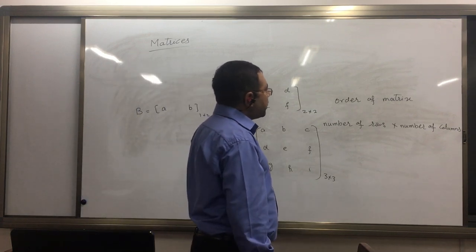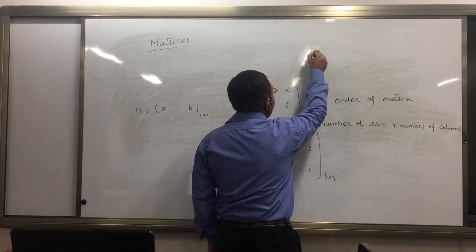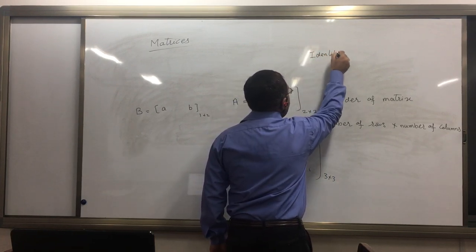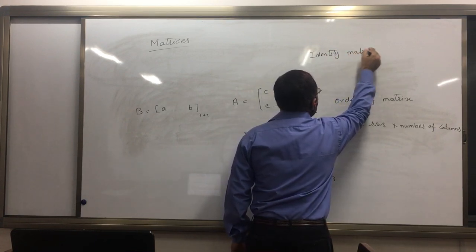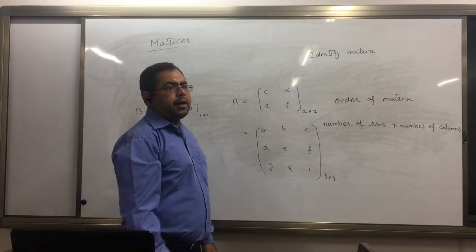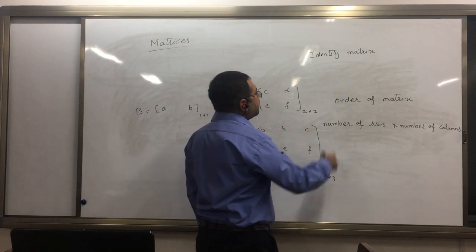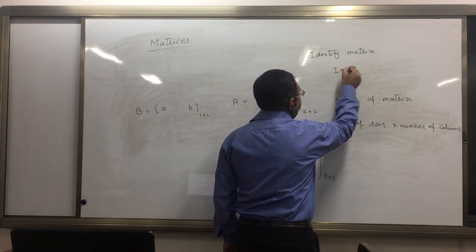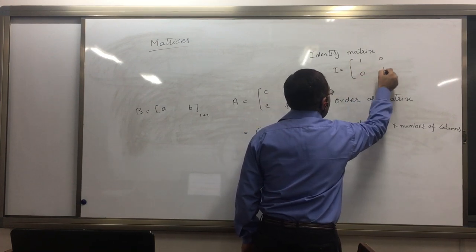And you have idea about the identity matrix. What is an identity matrix? Identity matrix is like a diagonal matrix which has elements 1, 0, 0, 1.